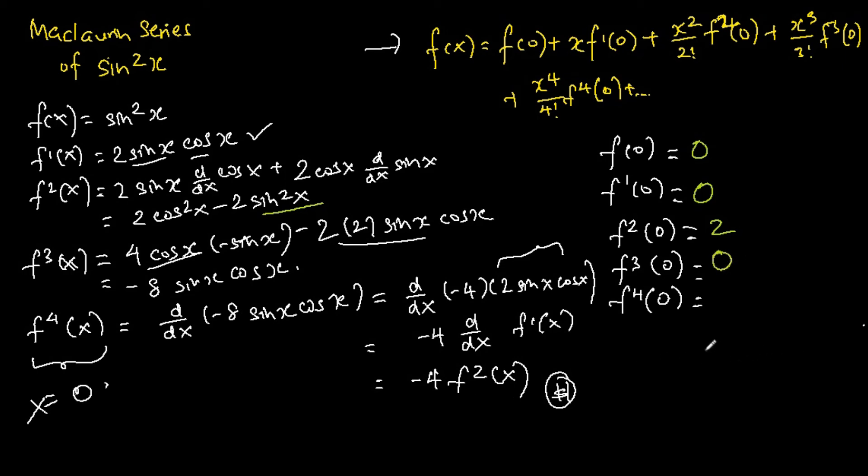Last but not least, f quadruple prime of zero is just negative 4 times f double prime of zero. We know f double prime of zero is two. So f quadruple prime of zero is negative 4 times 2, which equals negative 8.